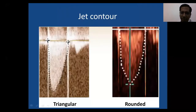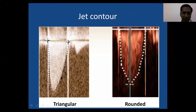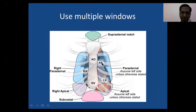The third qualitative step is assessing jet contour. A nice triangular jet suggests normal function, while a more rounded contour generally points to more severe obstruction. Valve clicks at opening and closing are also informative — they tell us qualitatively that the valve is opening and closing adequately. Always use as many windows as possible when looking at valve structure or taking Doppler gradients — never settle for one window.